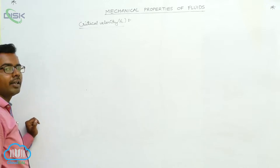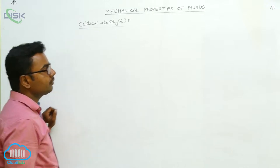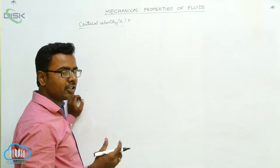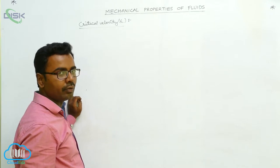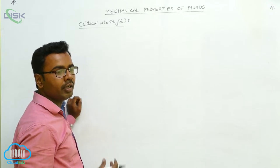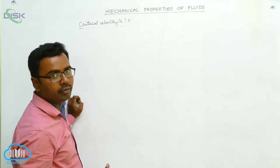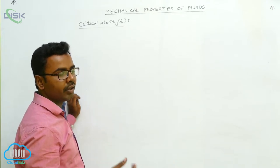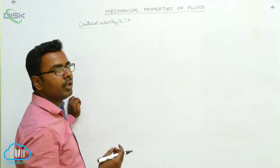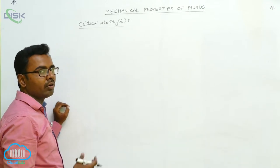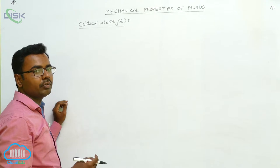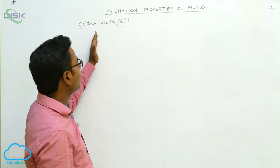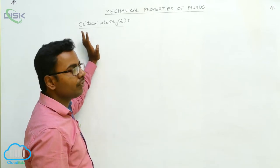Now we define critical velocity Vc. We know that steady flow is a slow flow and turbulent flow is a heavy flow. As the velocity of steady flow gradually increases, at a particular velocity it may convert into turbulent flow. The velocity at which steady flow converts into turbulent flow is called critical velocity, denoted as Vc.